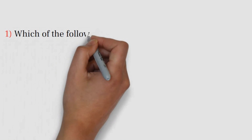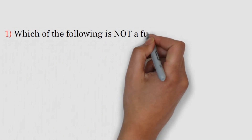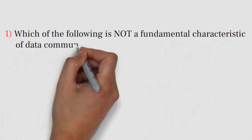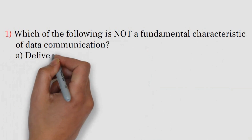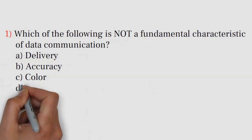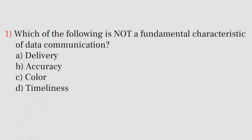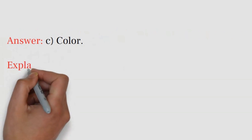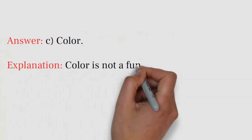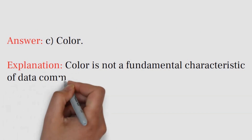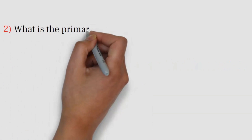Question number one: Which of the following is not a fundamental characteristic of data communication? A) Delivery, B) Accuracy, C) Color, D) Timeliness. Answer: C) Color. Explanation: Color is not a fundamental characteristic of data communication.